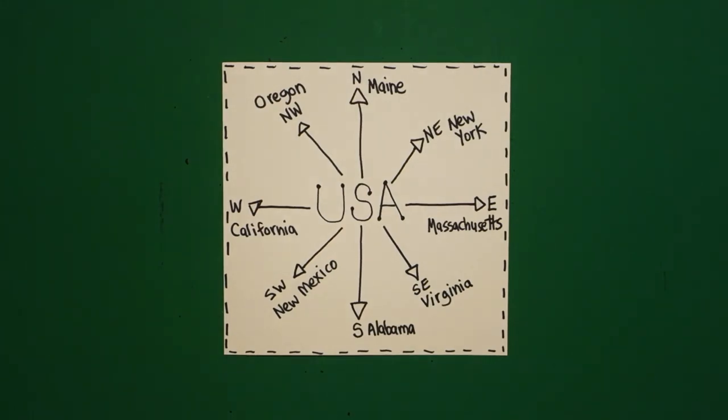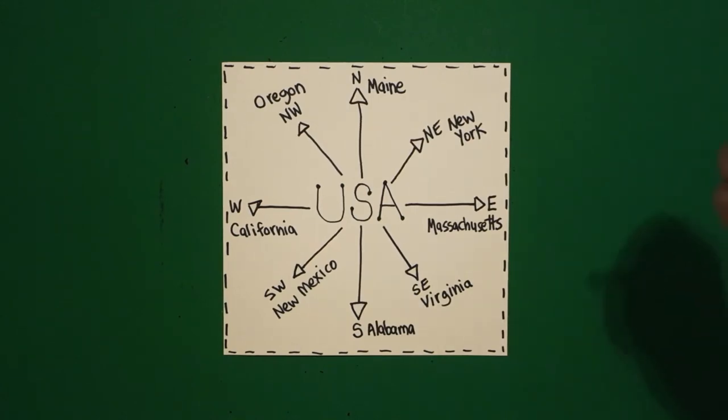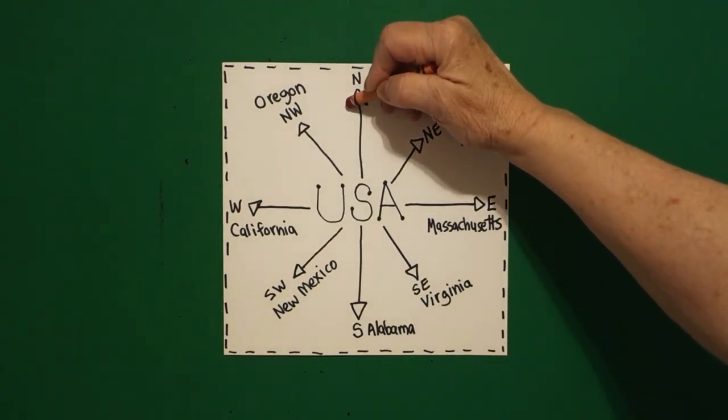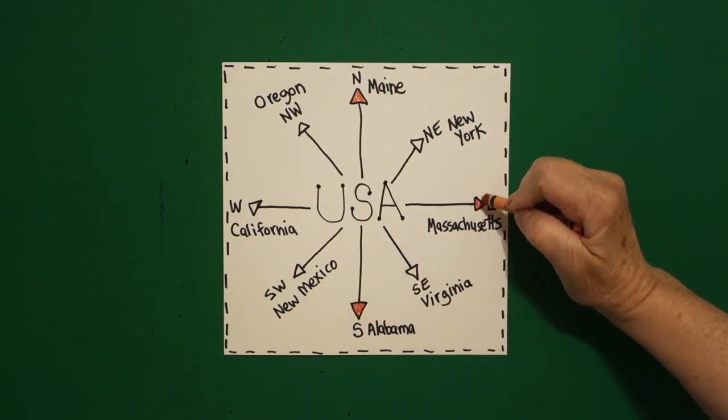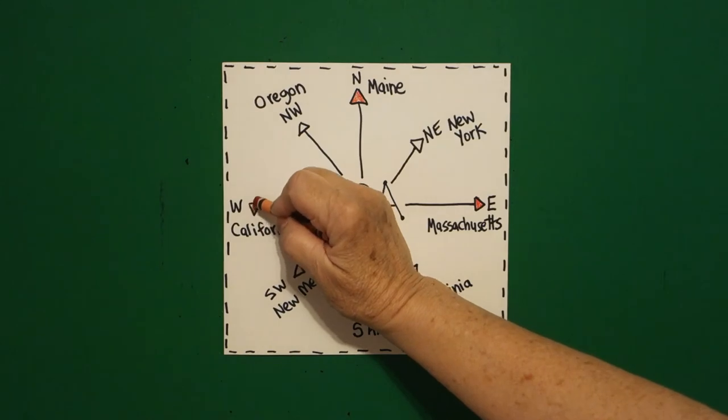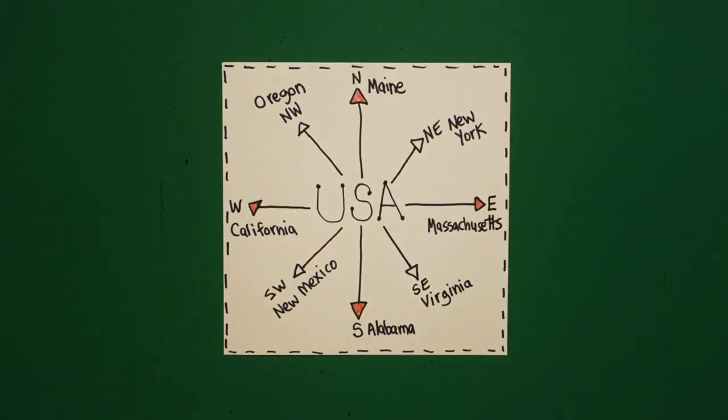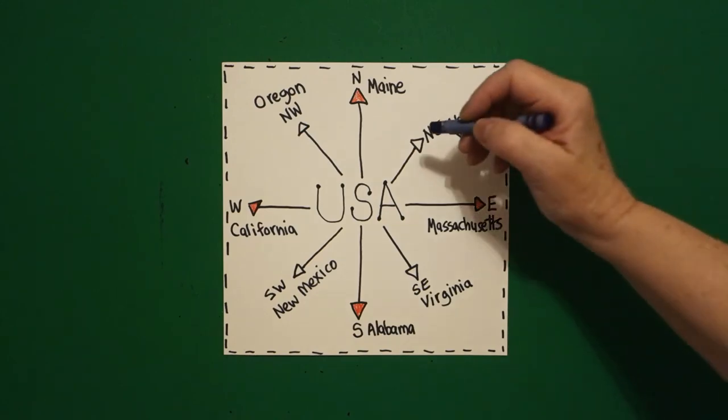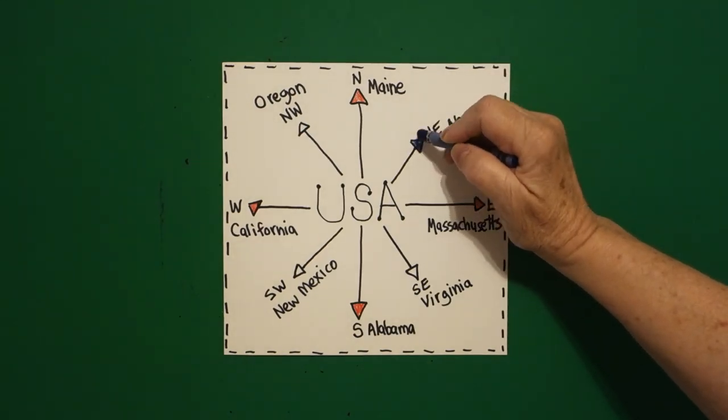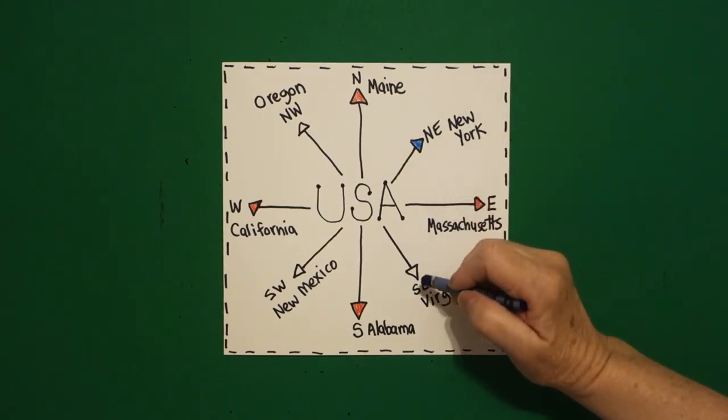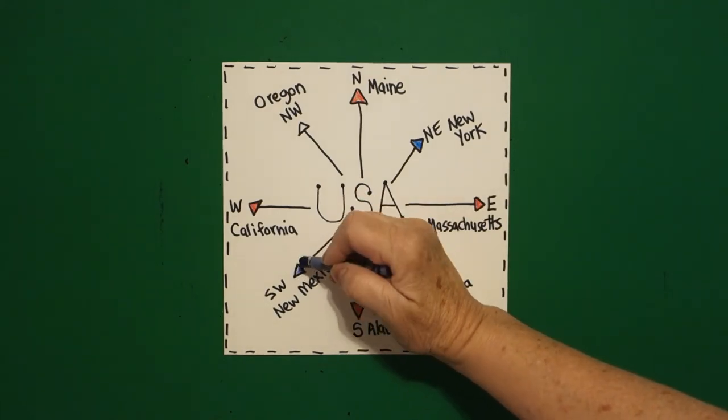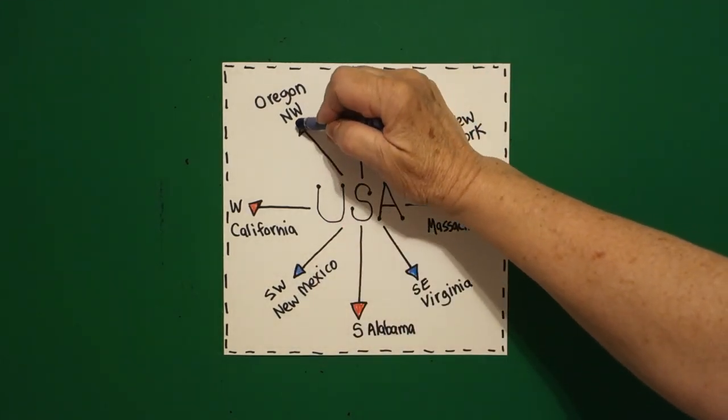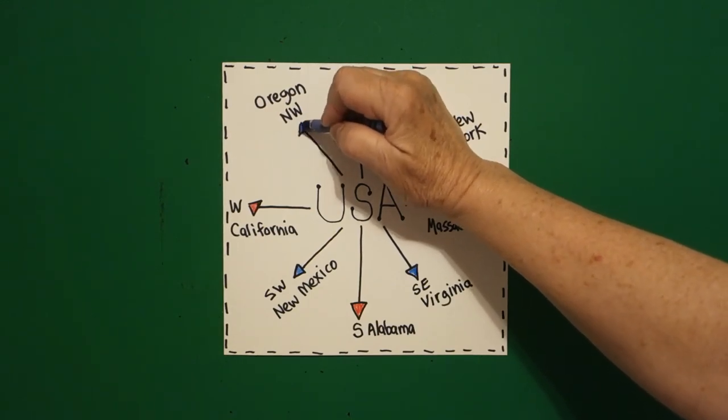Let's see how we're going to color this in. Really easy. I'm going to use red for my north, my south, my east, and my west directions for the triangles. Then, I'm going to come in and use my blue for the directional in between. Northeast, southeast, southwest, northwest. Probably one of the easiest lessons to color.